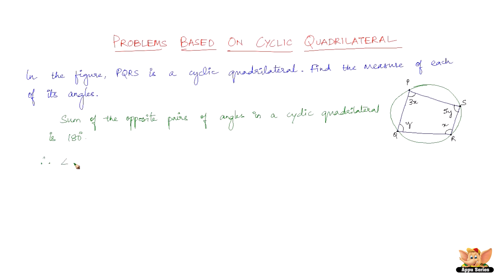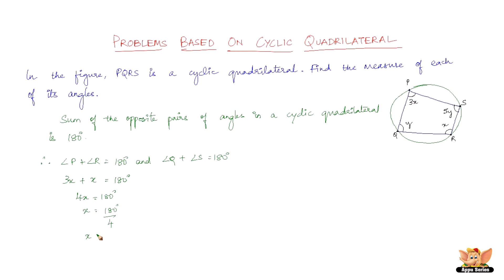Angle P plus angle R equals 180 degrees, and angle Q plus angle S equals 180 degrees. Angle P equals 3x and angle R equals x, so 3x plus x equals 180 degrees. 4x equals 180 degrees, so x equals 45 degrees.